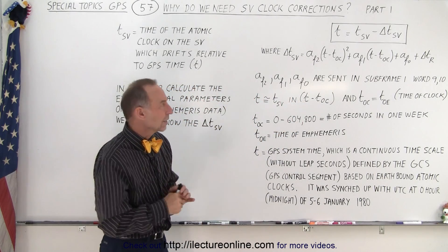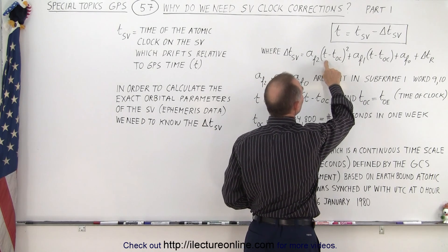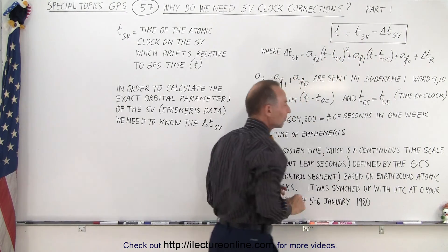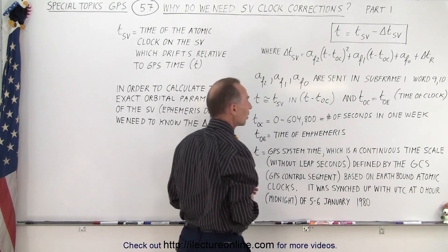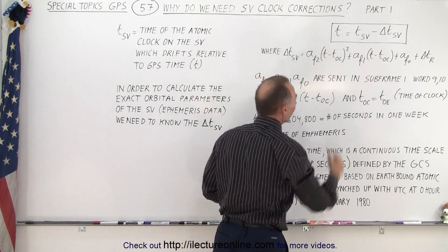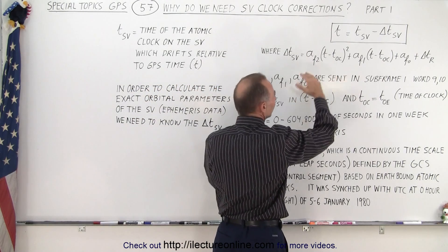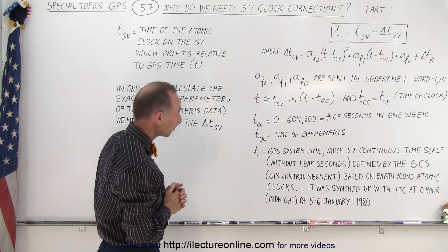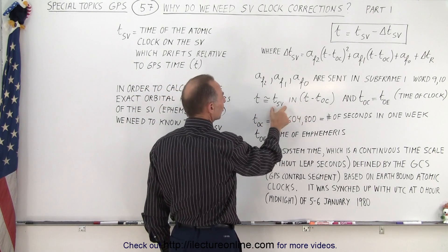We don't really care that there's a slight difference between these values. What we want to do is use tsv — so instead of using t we use tsv, which is approximately equal to t. That small delta between the two doesn't play any role in the difference between the two values. We can simply take tsv minus toc, which is just about the same as t minus toc, because this goes into the value of several hours and we don't need to worry about a very tiny sub-fraction difference.